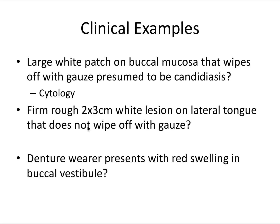For example two, you have a firm, rough, two by three centimeter white lesion on the lateral tongue that does not wipe off with gauze. Focusing on the high-yield facts: this is a greater than one centimeter lesion and we don't have a lot of information for the differential diagnosis. It could be a papilloma, though those are usually smaller, or it could be squamous cell carcinoma. Nothing is wiping off, it's a firm lesion greater than one centimeter, so what we're going to do here is an incisional biopsy.